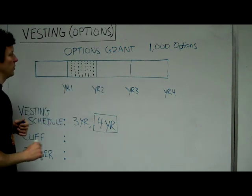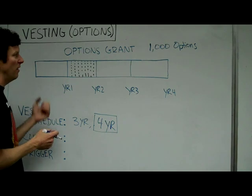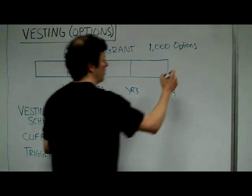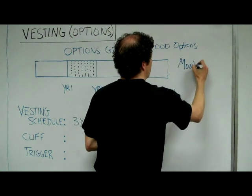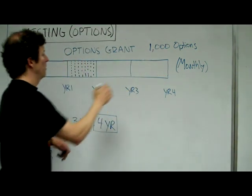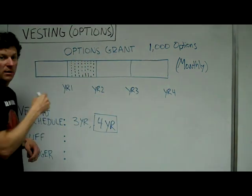Let's talk about how vesting usually works. Often, the options grants are split into periods of time. The most common period of time is monthly. So you're going to vest on a monthly basis. Meaning, every month, you're going to get a little bit of your options.